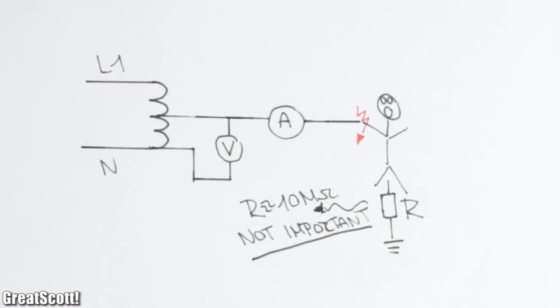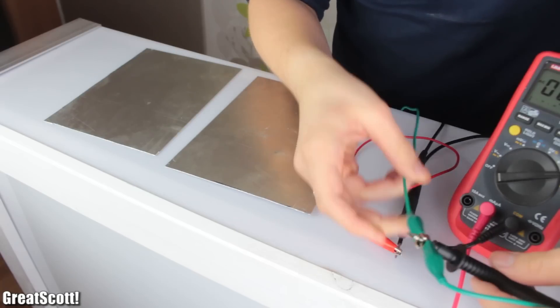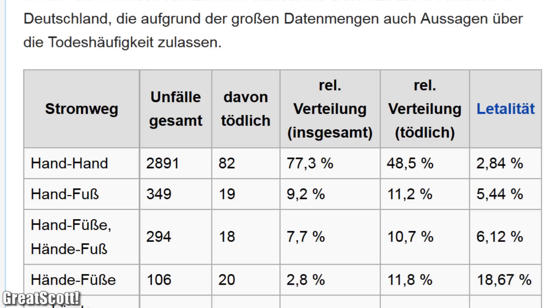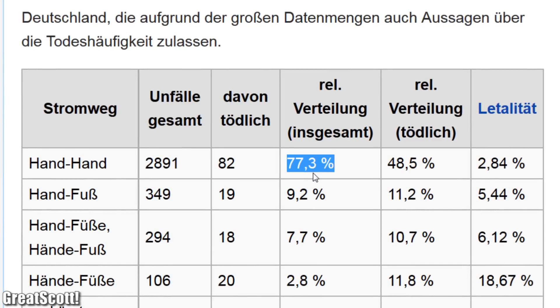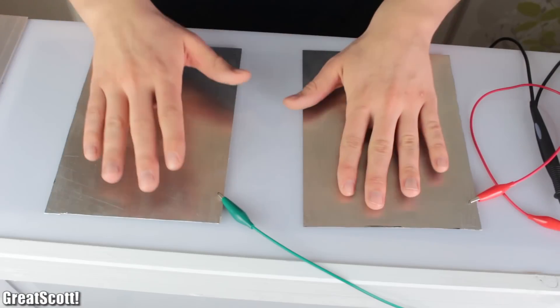And with that problem out of the way, I started the AC experiment by using a similar setup, but also added two aluminum sheets which will act as a contact point. Because the majority of electrical accidents happens by touching different voltage potentials with your hands.